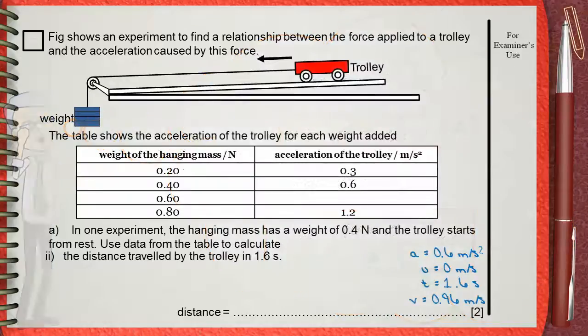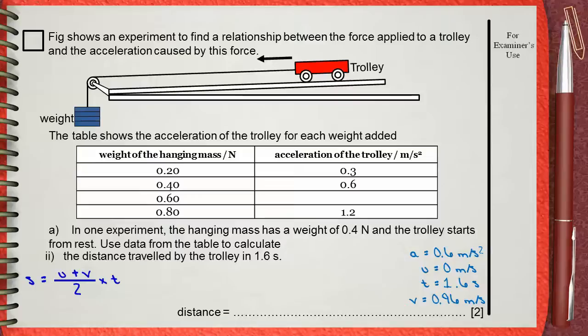Because you have all the givens. The first one is s equals u plus v divided by 2, which is the average speed multiplied by the time. The second one is s the distance equals ut plus half at square. Both equations will work and both will give the same answer.